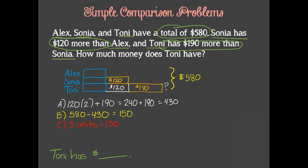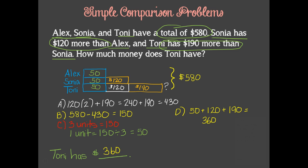Therefore, one unit will equal 150 divided by 3, which equals 50. Now we can go ahead and fill that in on our model. And finally, in order to find out how much money Tony has, we will add 50 plus 120 plus 190, which is 360. Tony has $360.